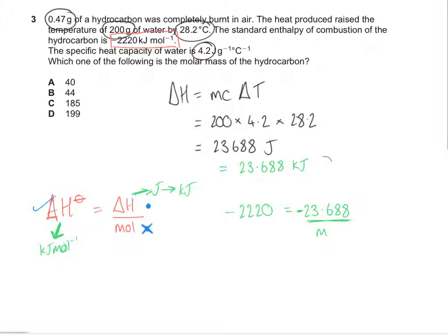And that is over the number of moles that we have. So rearrange that equation. The number of moles is going to be minus 23.688 over minus 2,220, which is 0.01067.